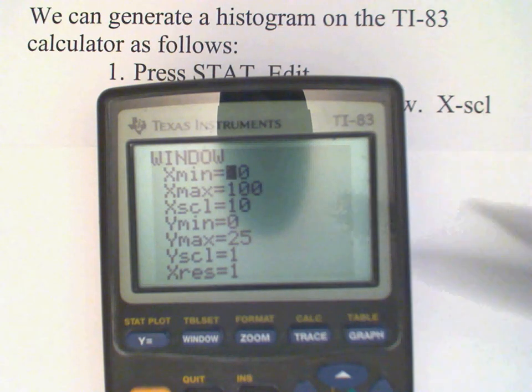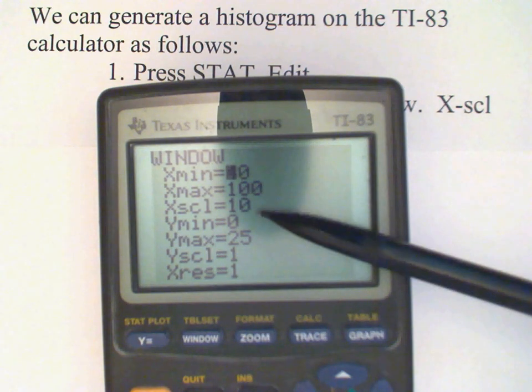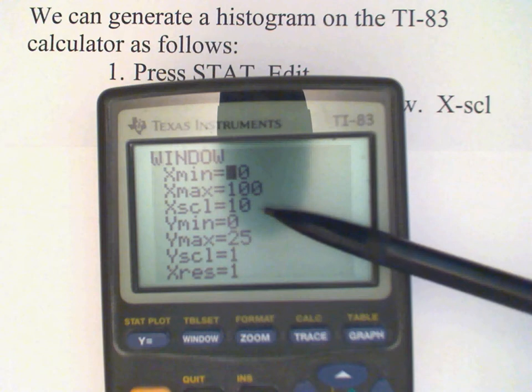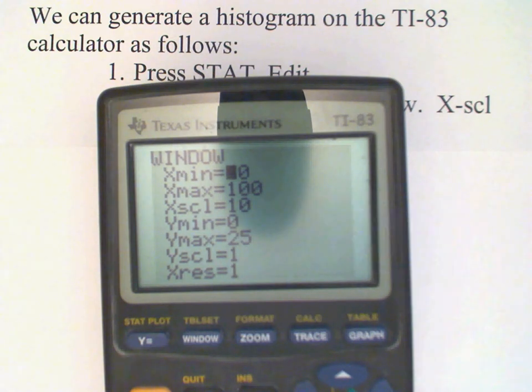But the X SCL, that gives the width of the bars. And we want width of 5. So I'm going to change that to 5.